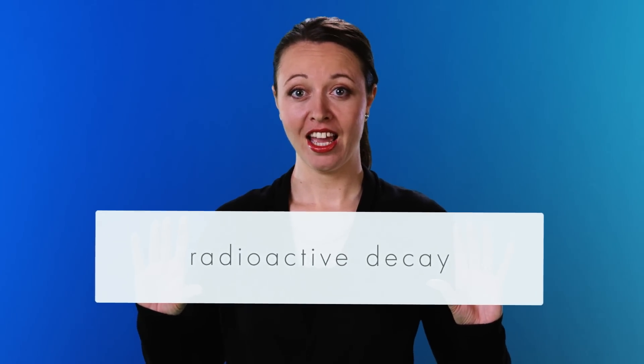Radioactive atoms want to become stable again, so they release energy until they get back to a balanced state. This process is known as radioactive decay, and there are three main types: alpha, beta, and gamma.